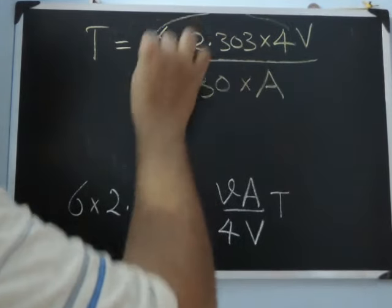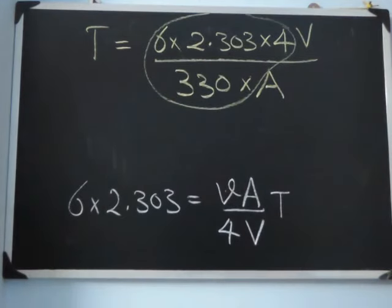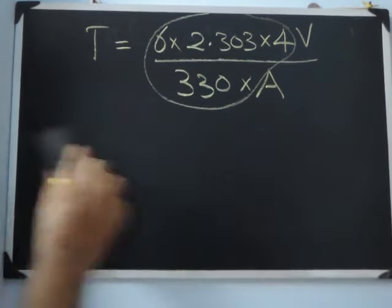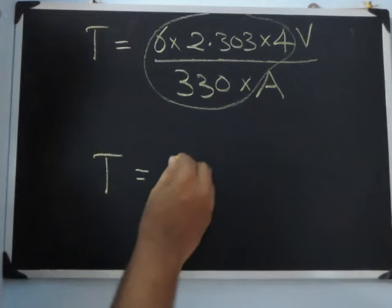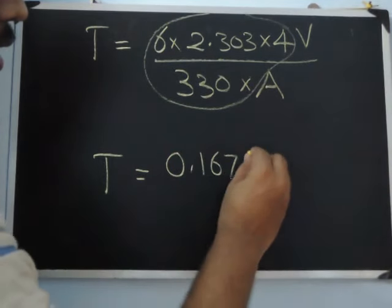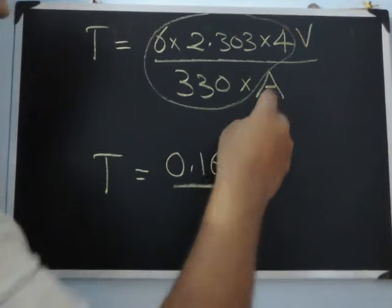These numbers, if you calculate them, will be 0.167. So then I can write Sabine's formula for reverberation time of a hall as 0.167 into V by A.